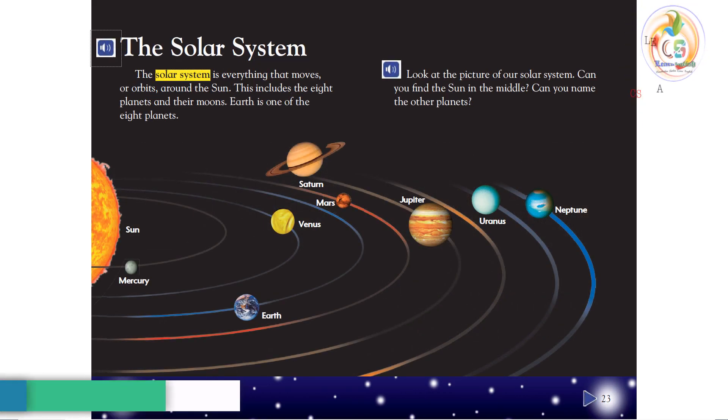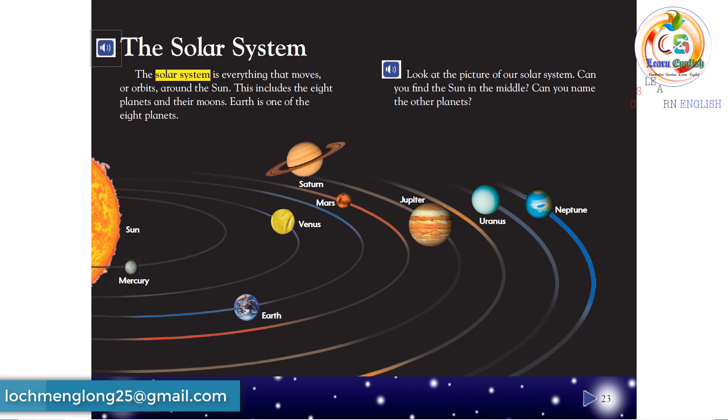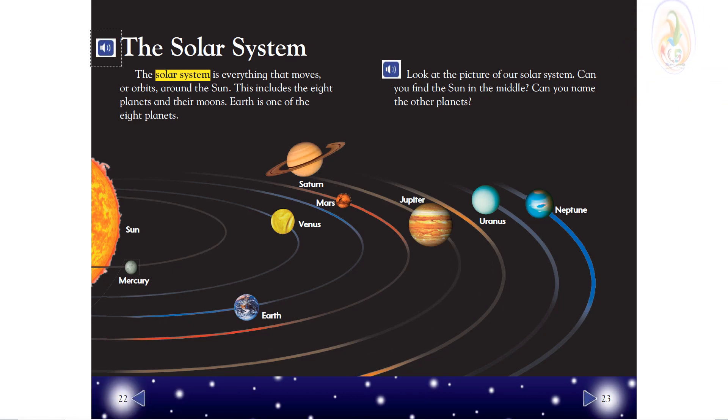The solar system is everything that moves or orbits around the Sun. This includes the eight planets and their moons. Earth is one of the eight planets. Look at the picture of our solar system. Can you find the Sun in the middle? Can you name the other planets?